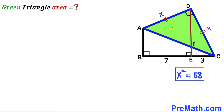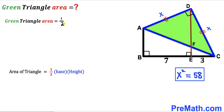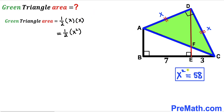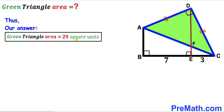Now we calculate the area of the green shaded triangle ADC. Using the area formula — one half times base times height — for this isosceles right triangle the base and height are both X, so area equals one half times X times X, which is one half times X². Substituting X² = 58, the area equals 29 square units. The area of green shaded triangle ADC is 29 square units.